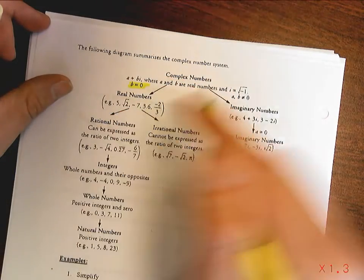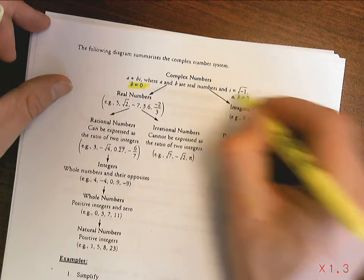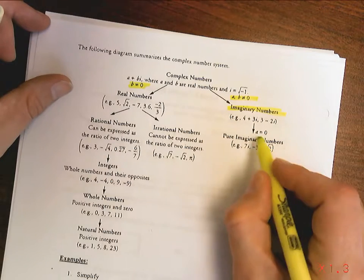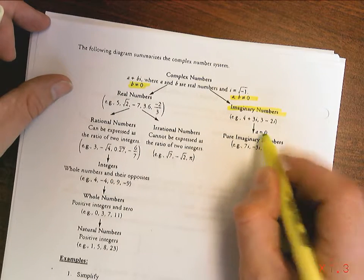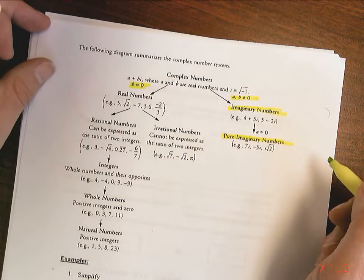So if b equals zero, then we've got real numbers. And we know that if b doesn't equal zero, but we have an a, then what we have are imaginary numbers. And if a doesn't equal zero, or sorry, if a does equal zero, then we have what we're going to call the pure imaginary numbers.